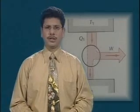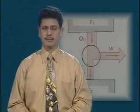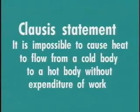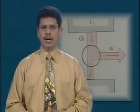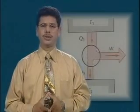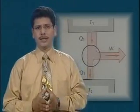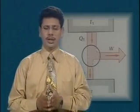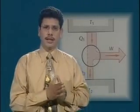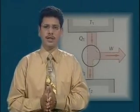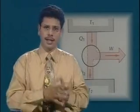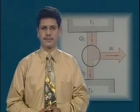Another statement of the second law of thermodynamics is: it is impossible to cause heat to flow from a cold body to a hot body without the expenditure of energy. Both of these statements are equivalent, and we can show that if one is wrong then the other is also wrong. So in other words, if we say Kelvin is wrong then we can show that Clausius is also wrong, or vice versa.